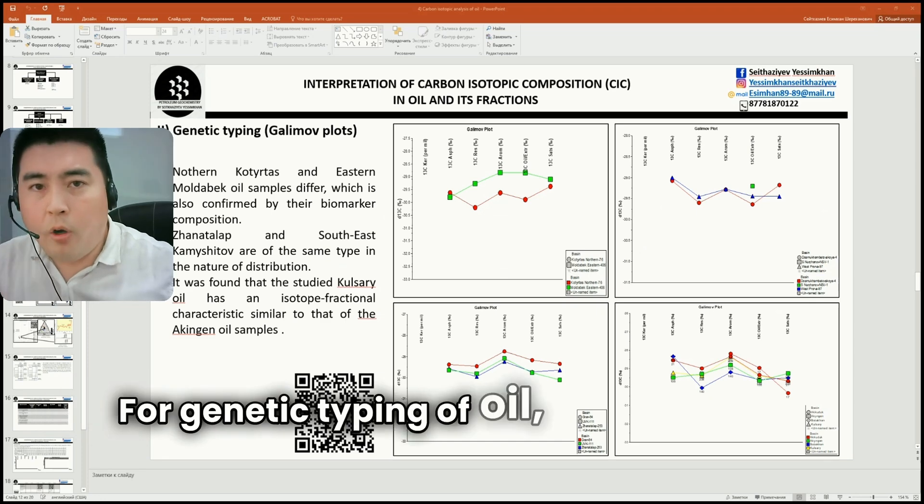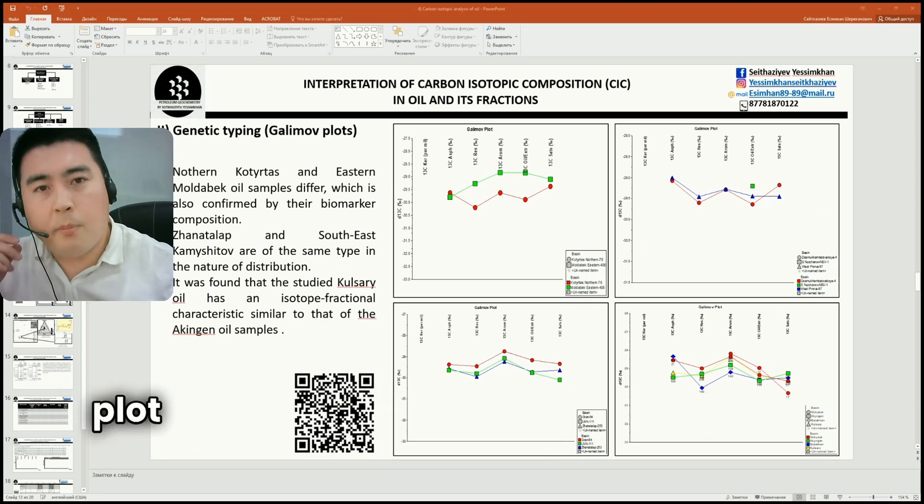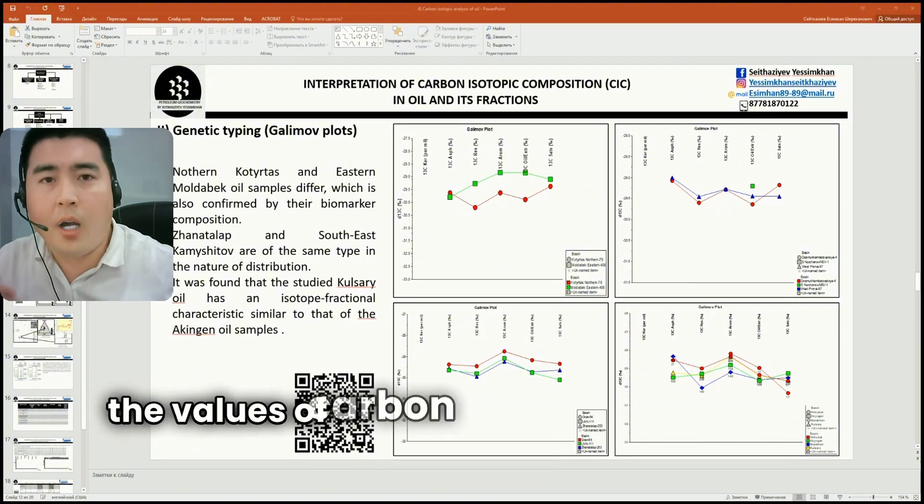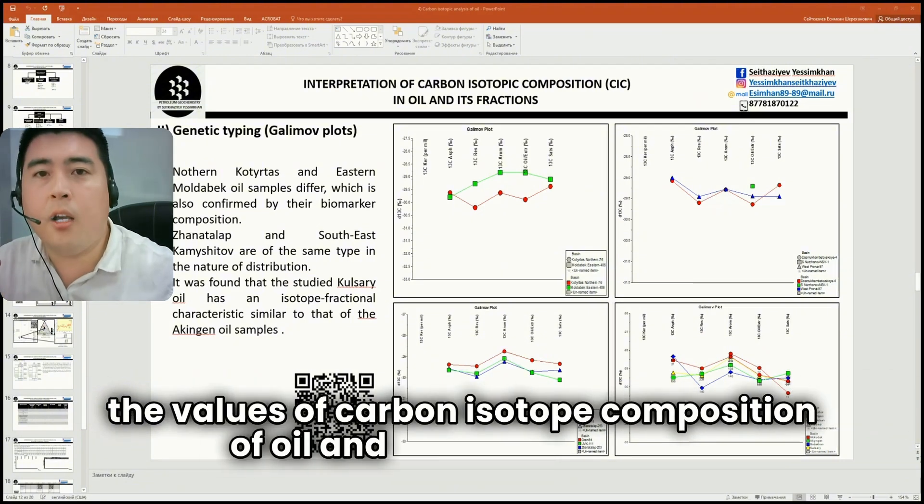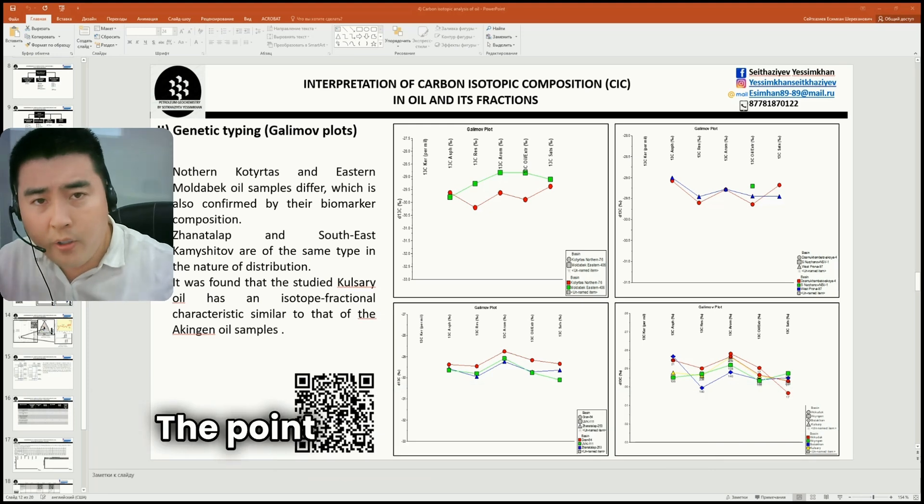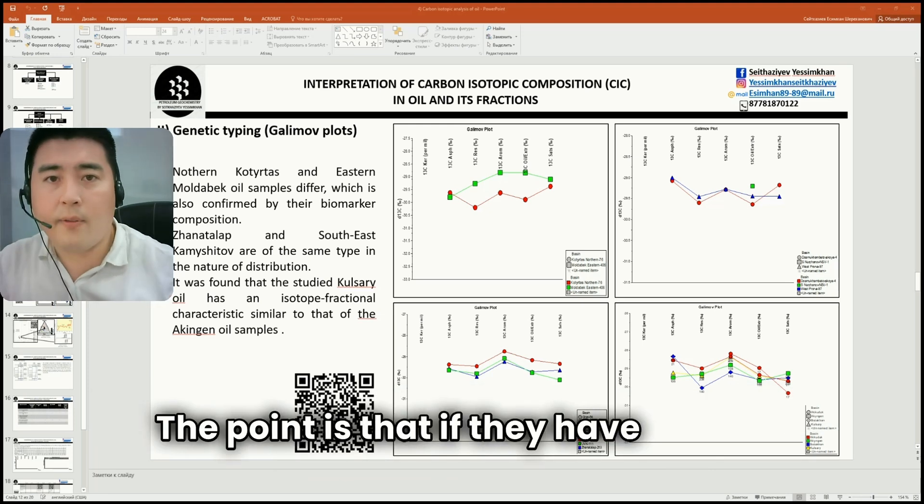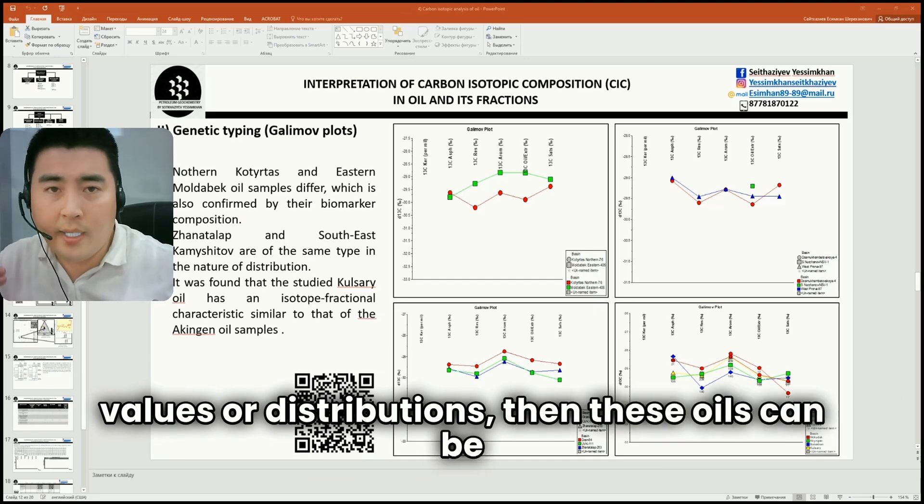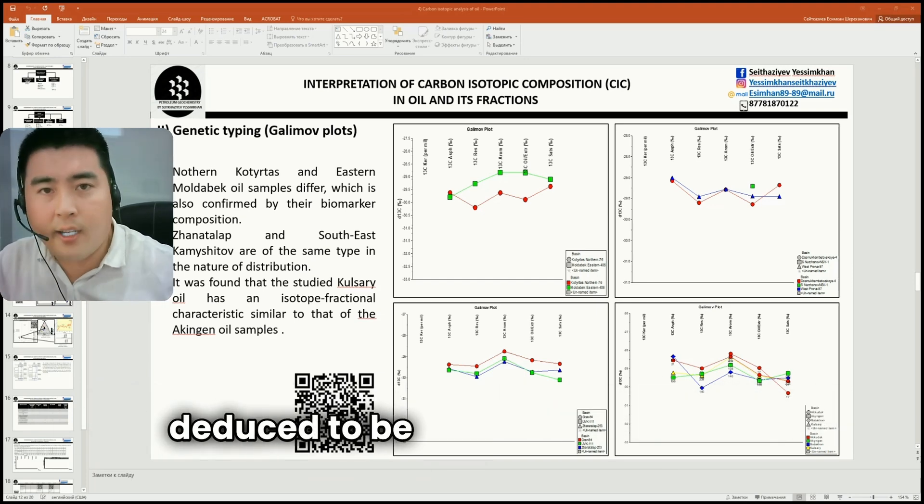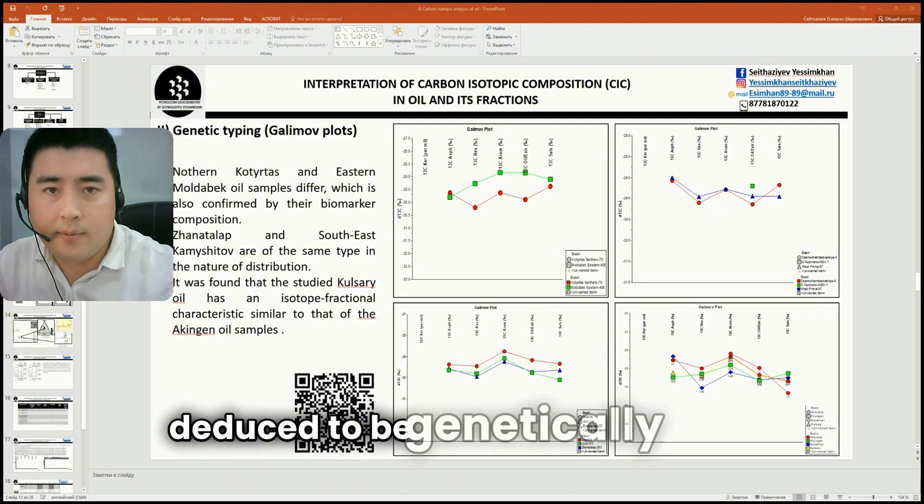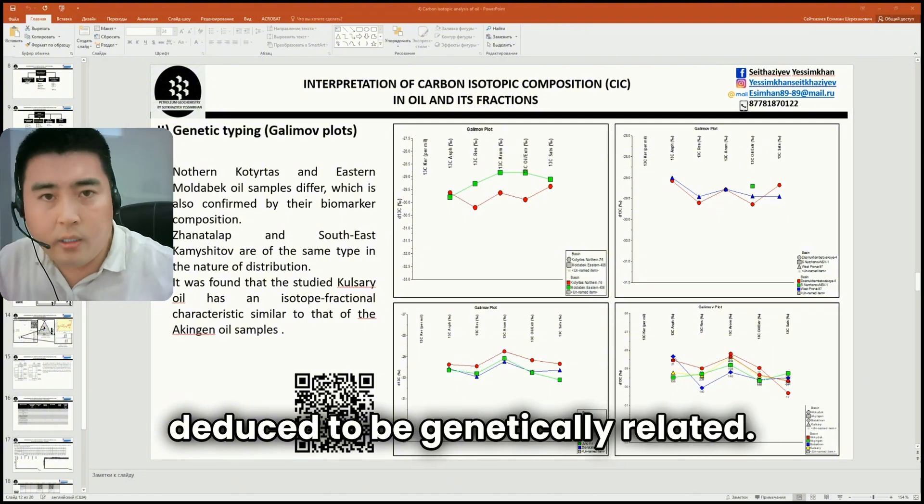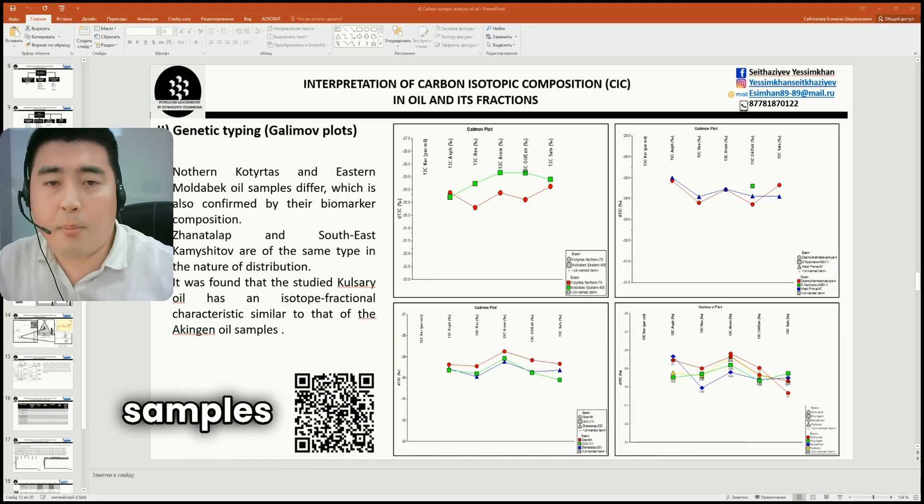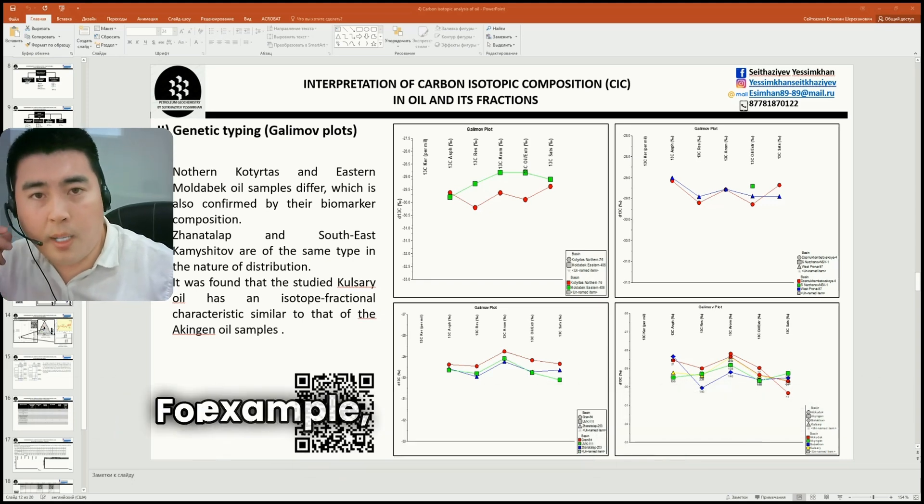For genetic typing of oil, you can use the Galimov plot for the construction of which you need the values of carbon isotope composition of oil and its four fractions. The point is that if they have similar values or distributions, then these oils can be deduced to be genetically related. If they differ, then these oil samples are generated from different source rocks.